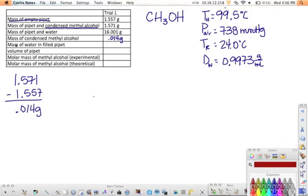Mass of the water in the filled pipette. Well again, come back up to the data that we collected. Mass of the pipette and water. Well there's the water, got to subtract out that pipette again. So we're going to take 16.001 and subtract the mass of the pipette, and this works out to 14.444.